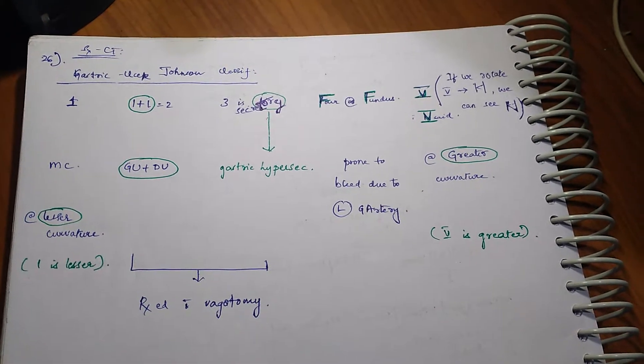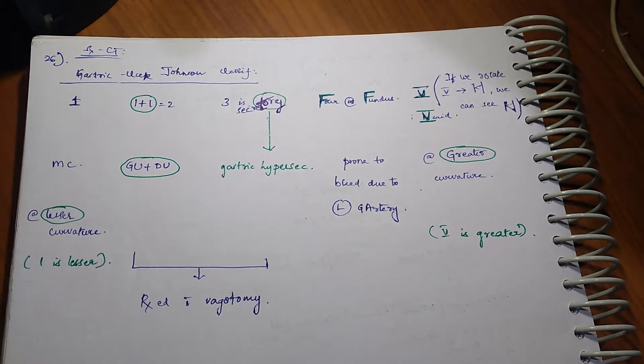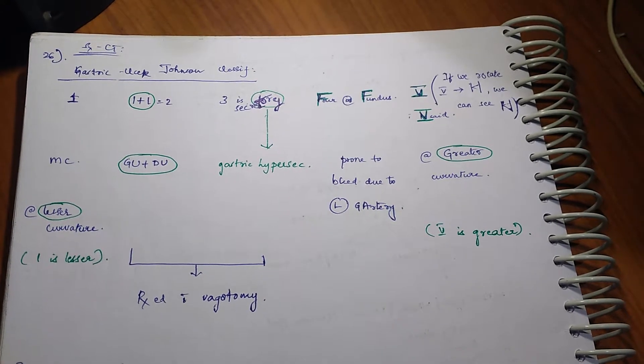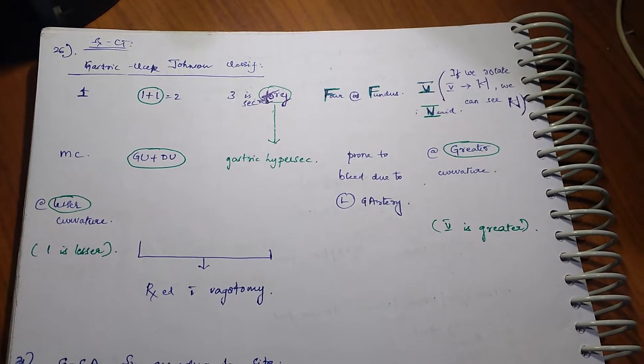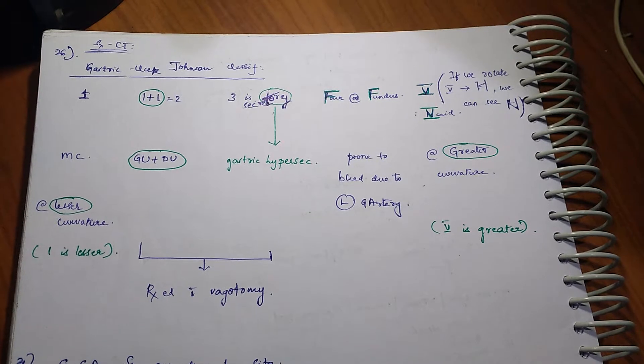Types 2 and 3 can be treated with vagotomy. These are the salient features of gastric ulcer according to Johnson classification.